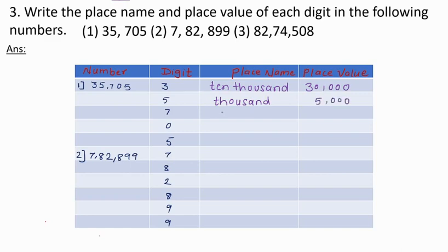Next digit is 7: its place name is 100 and place value is 700. Next is 0: 0 is at the 10th place, and the place value of 0 is always 0. Next digit is 5: it is at unit place and place value is 5.